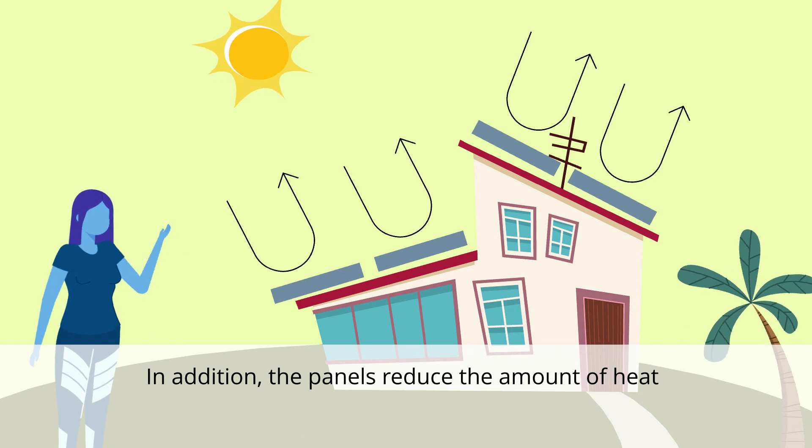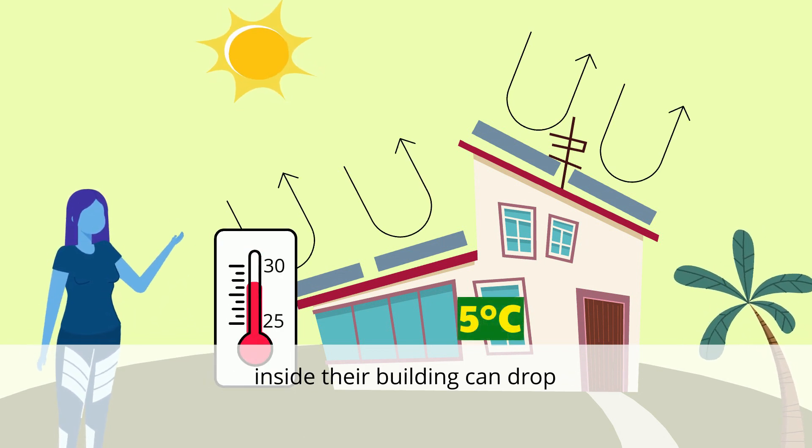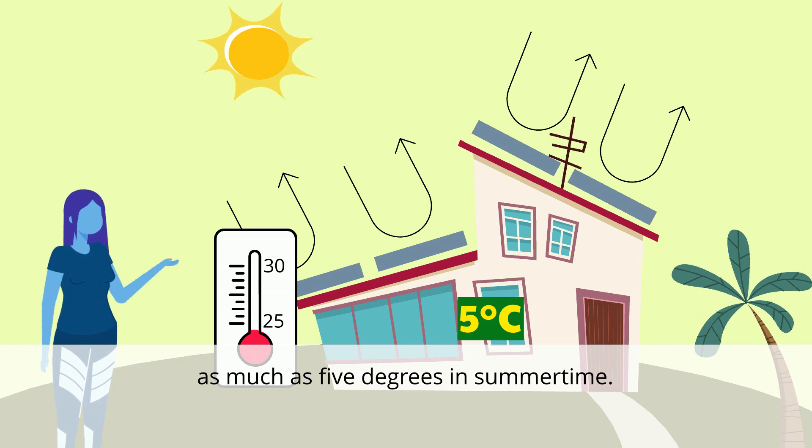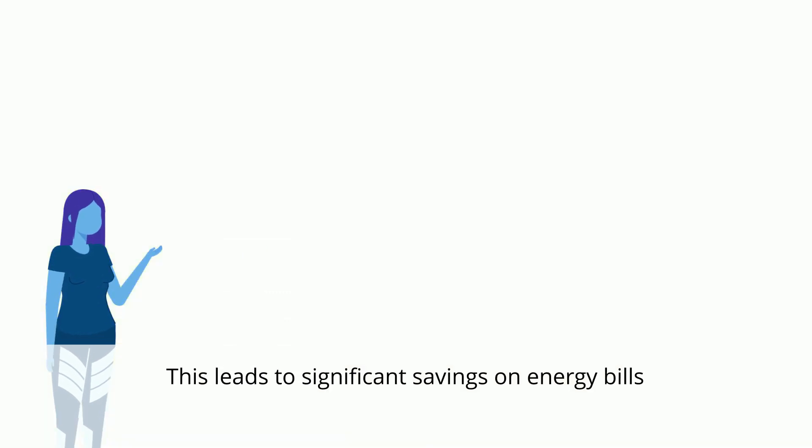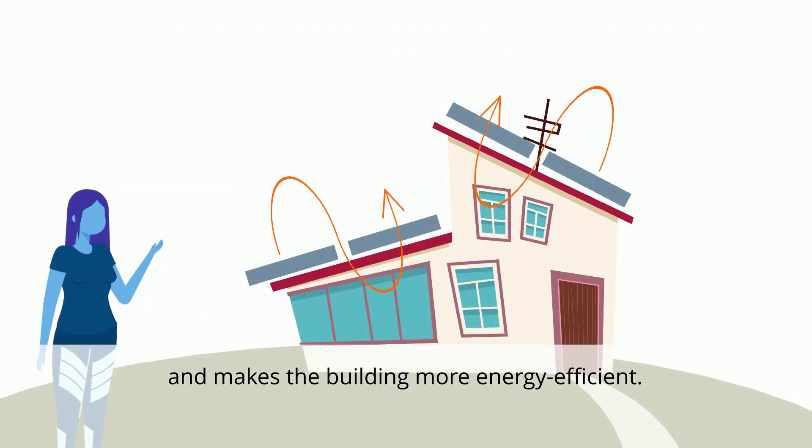In addition, the panels reduce the amount of heat that reaches the roof, and the temperature inside their building can drop as much as 5 degrees in summertime. This leads to significant savings on energy bills and makes the building more energy efficient.